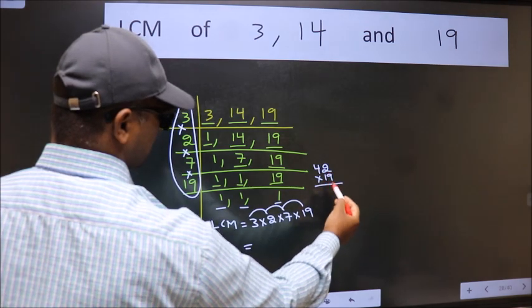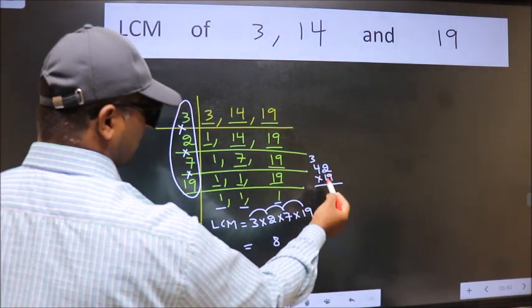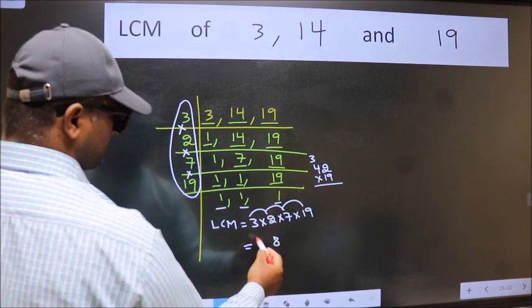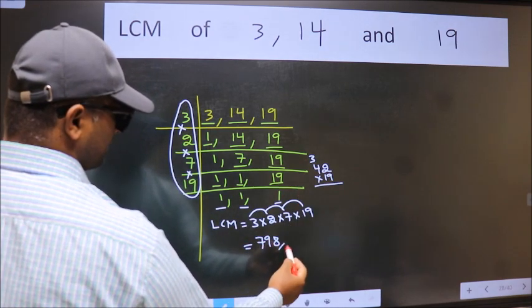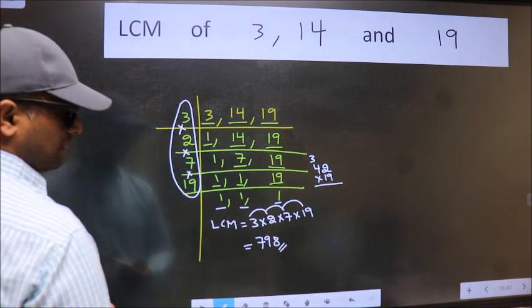19 times 2 is 38, 8, 3. 19 times 4 is 76 plus 3, 79. So 798 is our LCM.